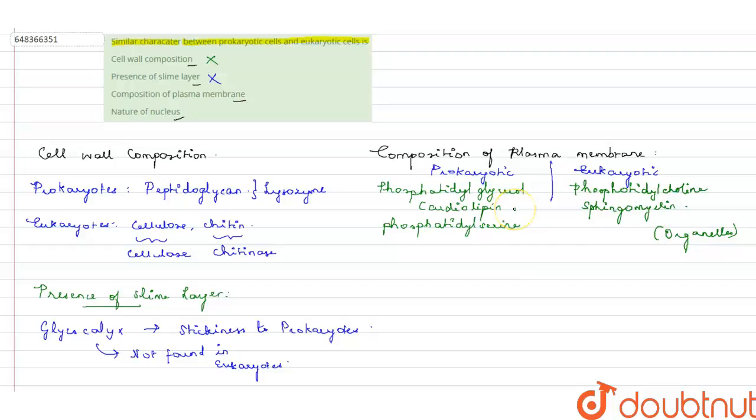Therefore, many of the functions of the membrane-bound organelles are taking place in the membranes of prokaryotes itself. But the composition of plasma membrane is somewhat similar. Phospholipids, cholesterol, lipids, and fats particles are present in both.